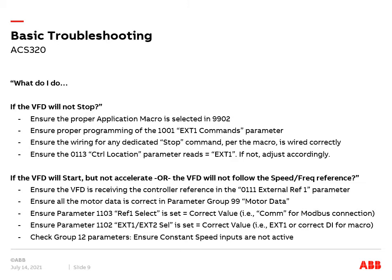Ensure parameter 1102, which is ext1/ext2 selection, is set equal to the correct value — for example, ext1 or the correct digital input for your given macro. And lastly, check group 12 parameters and ensure that constant speed inputs are not active.